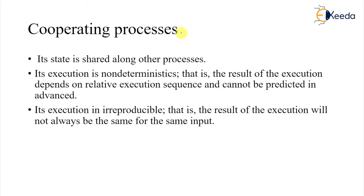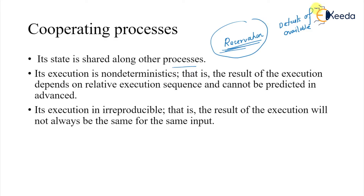In the real world, most processes are cooperating processes. Their state is shared among the processes. The best example is a reservation system — if one process is reserving a ticket and another process is fetching the details of available seats, these two processes are not independent. Their data is shared, as the reservation process and the seat availability process depend on each other.